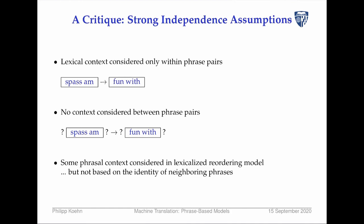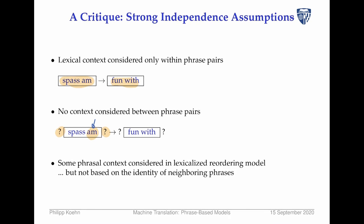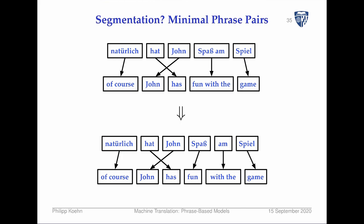The model also has a very strong independence assumption. We have the nice benefit of considering lexical context within a phrase pair, but we're not actually looking at any context outside the phrase pair. So whatever occurs to the left or right — maybe the decision of this determiner or preposition combination is very dependent on the next word — we don't know what that noun is.